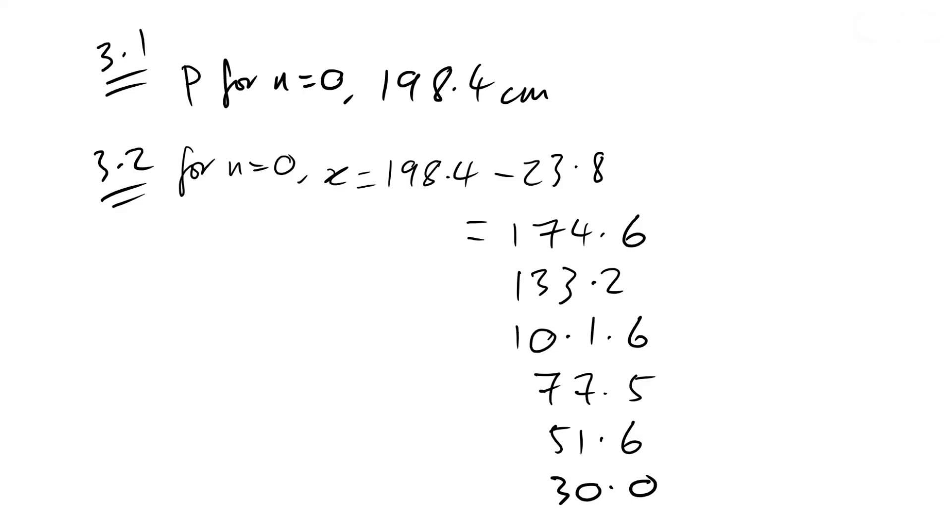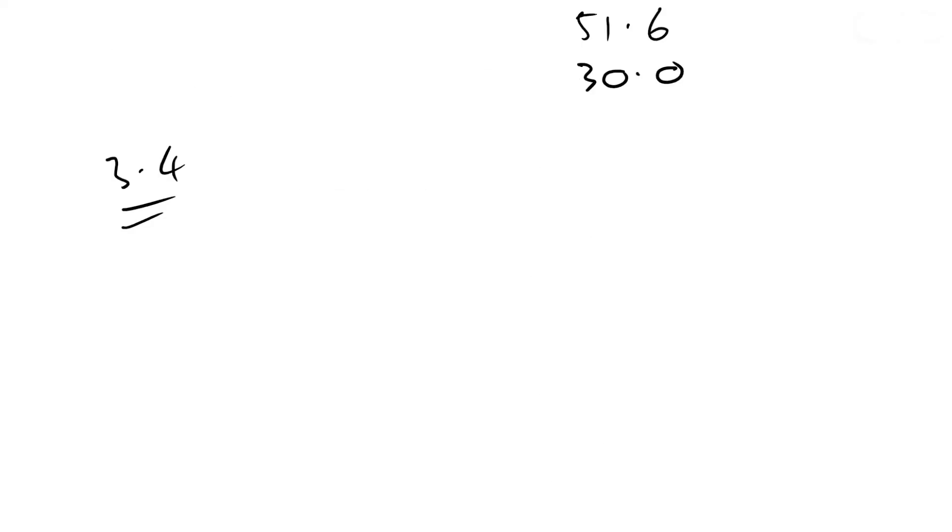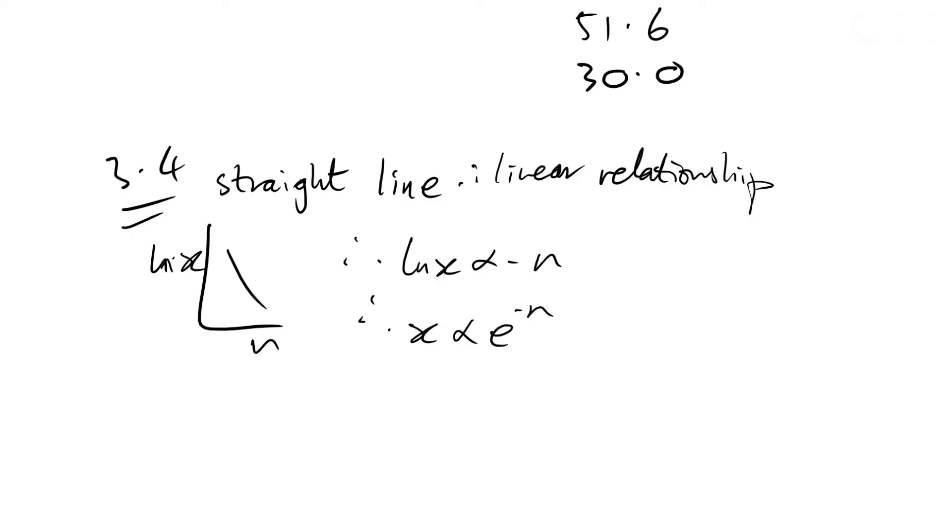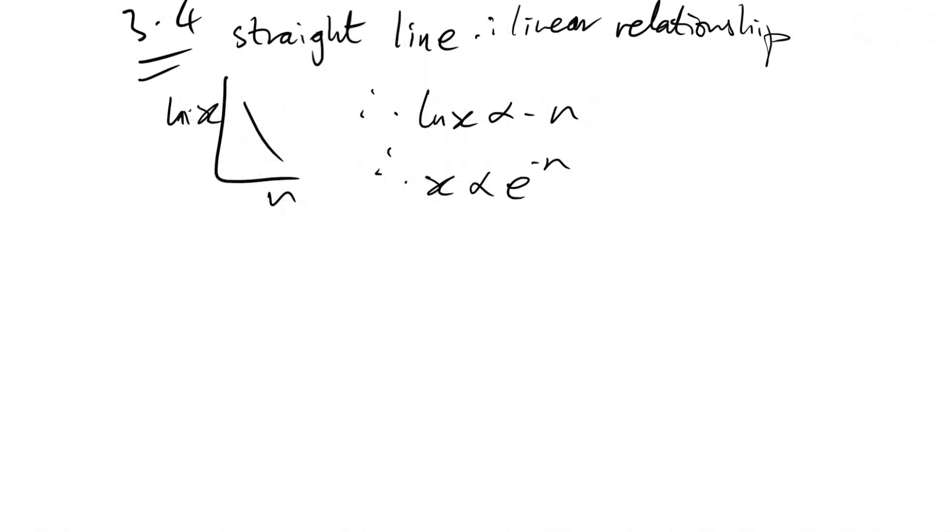3.4: How does the graph show that x and n are exponentials? You have a straight line, therefore linear relationship looks like this. Therefore we can say the log x is proportional to minus n. De-log both sides, we can say that x is proportional to e to the minus n. And we don't even need to go into that sort of detail.